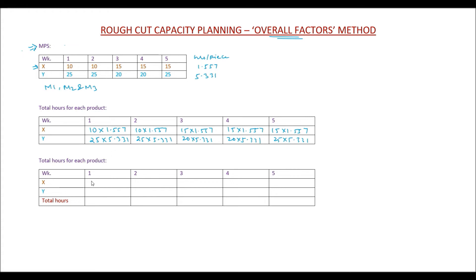10 multiplied by 1.557 will be 15.57, again 15.57. As you can see, I have noted down these numbers. These numbers are basically for each of the weeks, how much total time is required for each product to be produced—that means how much time each of these products is going to be utilizing on these three machines M1, M2, and M3. X in week 1 will require 15.57 hours of M1, M2, and M3. Similarly, Y in week 1 will require 133.275 hours of M1, M2, and M3.